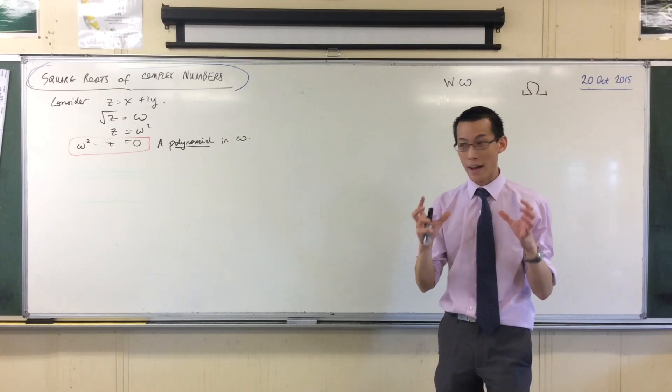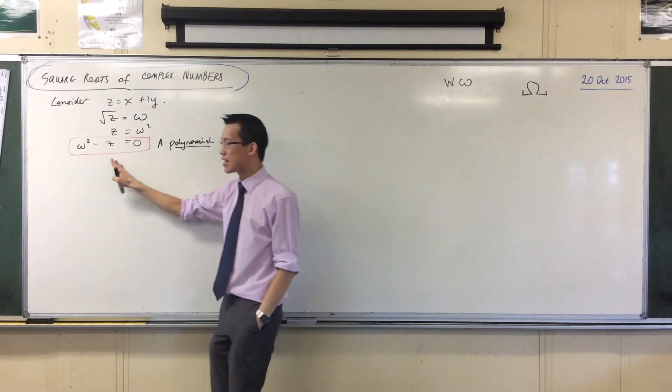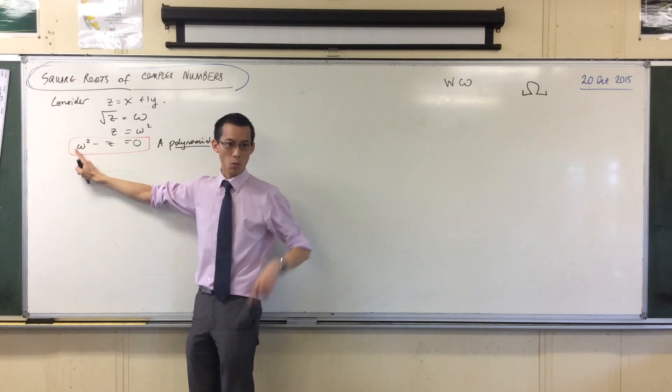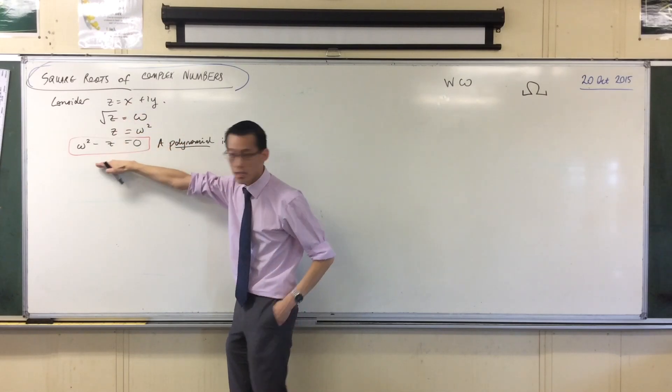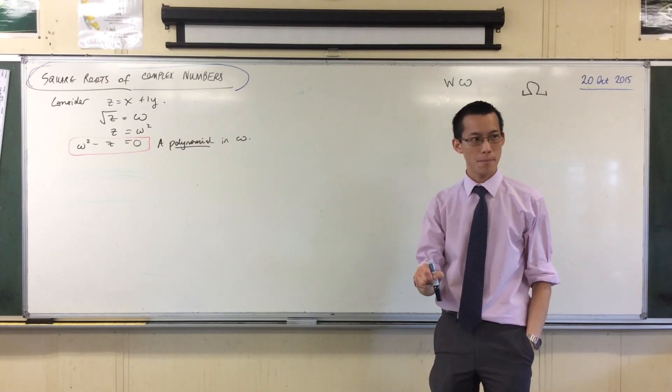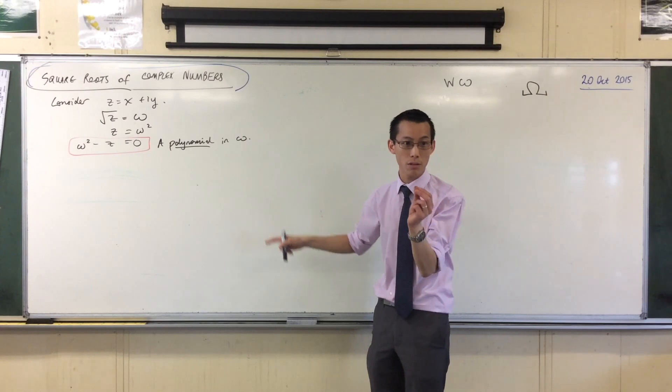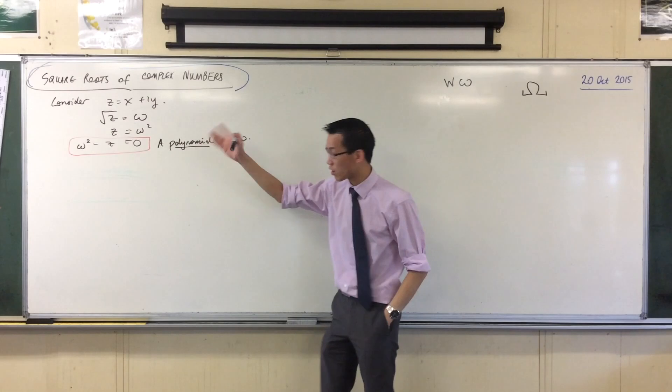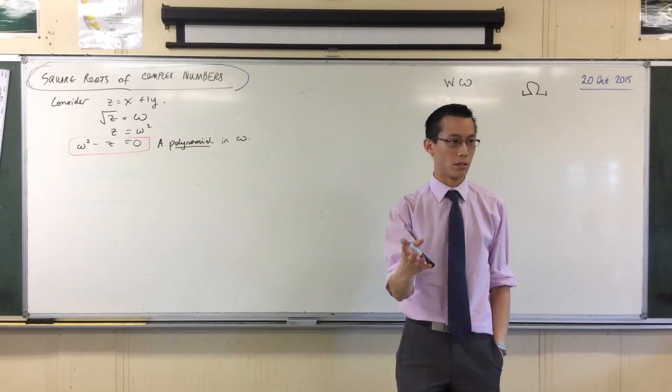Now, the fundamental theorem of algebra states that if you have a polynomial, any polynomial that has complex coefficients. What's the coefficient of omega squared? One. What's the coefficient of the constant? Which is z, which is a complex number. This is a polynomial with complex coefficients. Therefore, I know that the solutions to this polynomial are also complex numbers. Do you see that? Do you understand the implication? If this is a polynomial and it's got complex coefficients, the fundamental theorem states it must have a complex solution, complex roots.